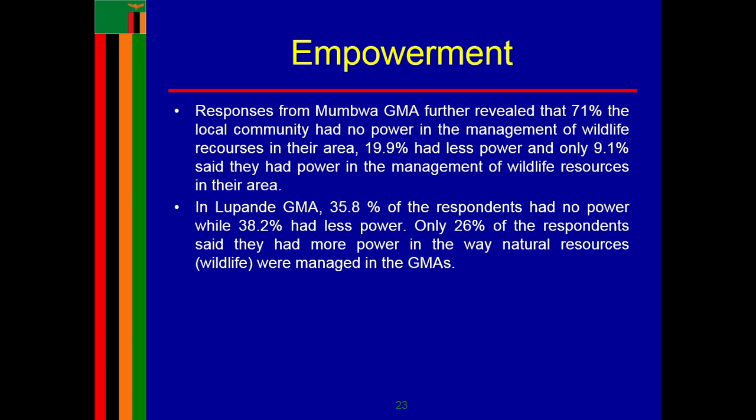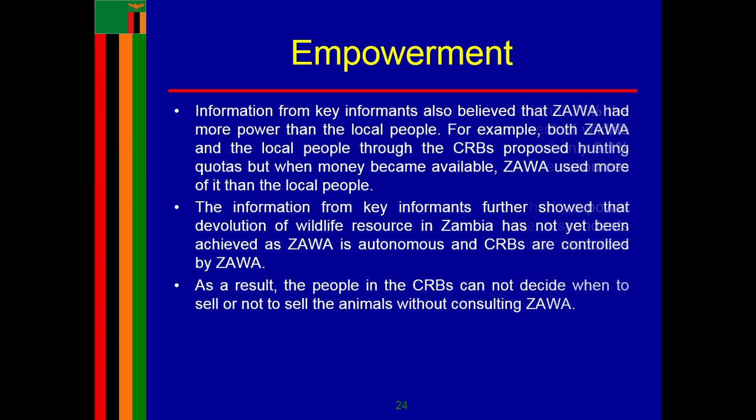Responses from Mumbwa GMA regarding empowerment revealed that 71 percent of the local community had no power in the management of wildlife resources in their area. In Lupande GMA, 35 percent of respondents had no power. Key informants also confirmed that ZAWA had more power than the local community — for example, both ZAWA and local people through the CRBs proposed hunting quotas, but when money became available, ZAWA used more of it. Devolution of wildlife resources in Zambia has not yet been achieved, as ZAWA is autonomous and CRBs are controlled by ZAWA.